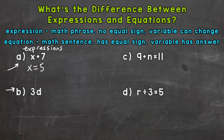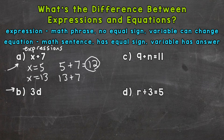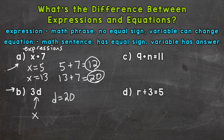Maybe we have x equals 5. If x equals 5, we plug 5 in for x and we get an answer of 12. Maybe x equals 13 — plug in and solve, we get an answer of 20. And for example B, whenever you have a letter right next to a number, that's multiplication. If d equals 20, we plug in and get an answer of 60.